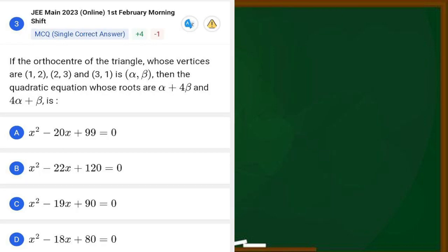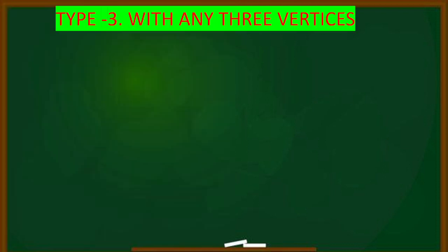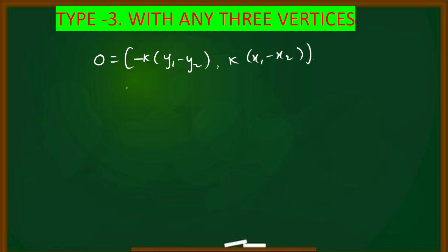We will discuss the formula for orthocentre. The orthocentre formula is: orthocentre equals (-k(y1 - y2), k(x1 - x2)), where k equals (x1·x2 + y1·y2) divided by (x1·y2 - x2·y1).